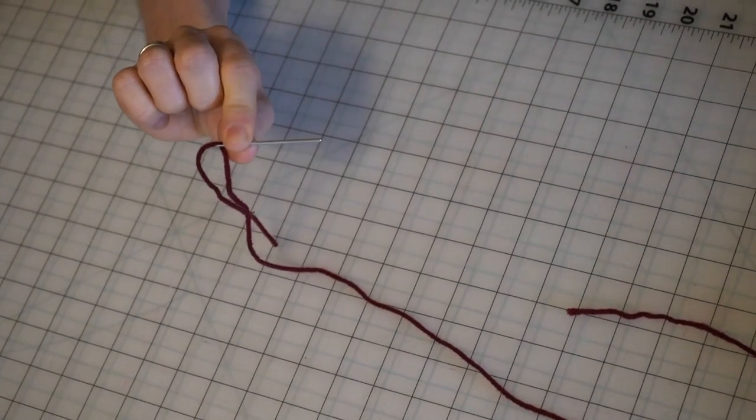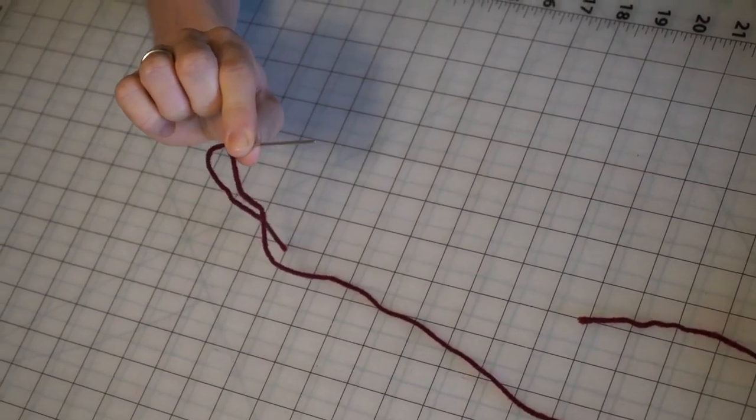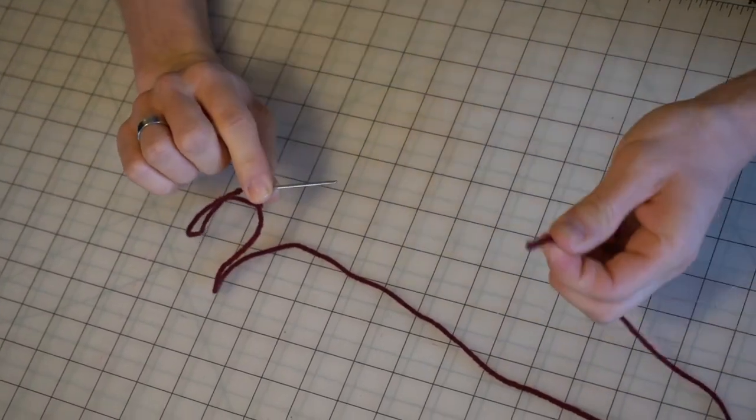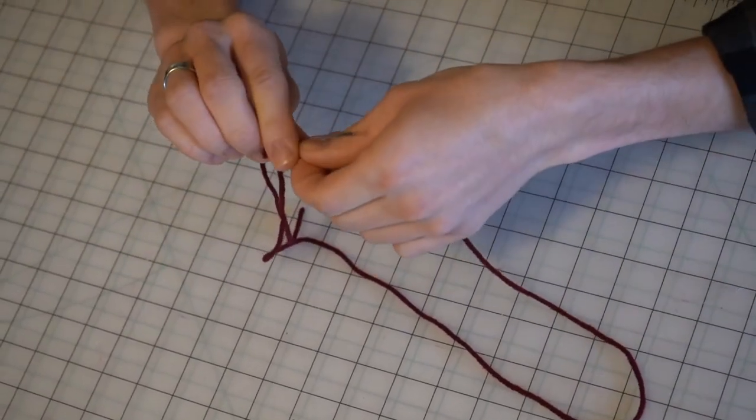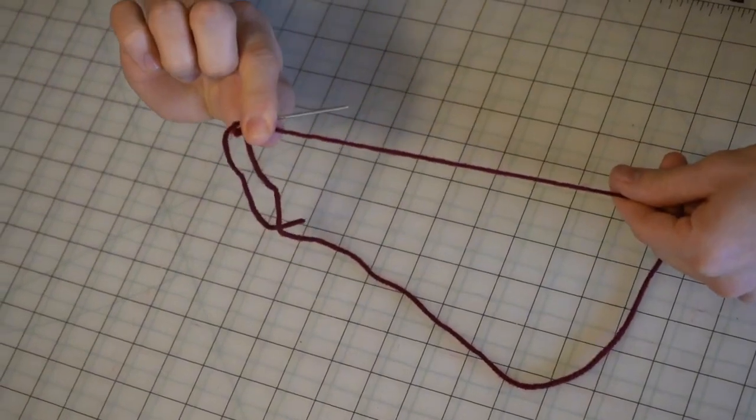So hold the needle between your thumb and your pointer finger of one hand and take the tail end of the thread. You're also going to hold that between the same fingers.